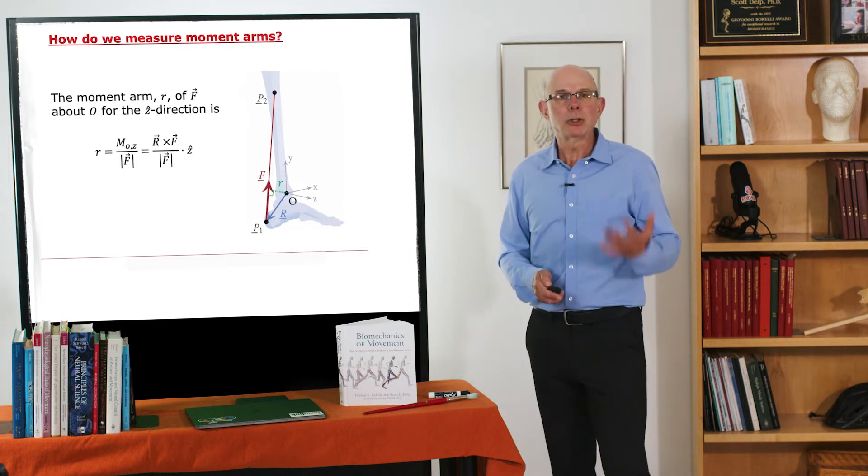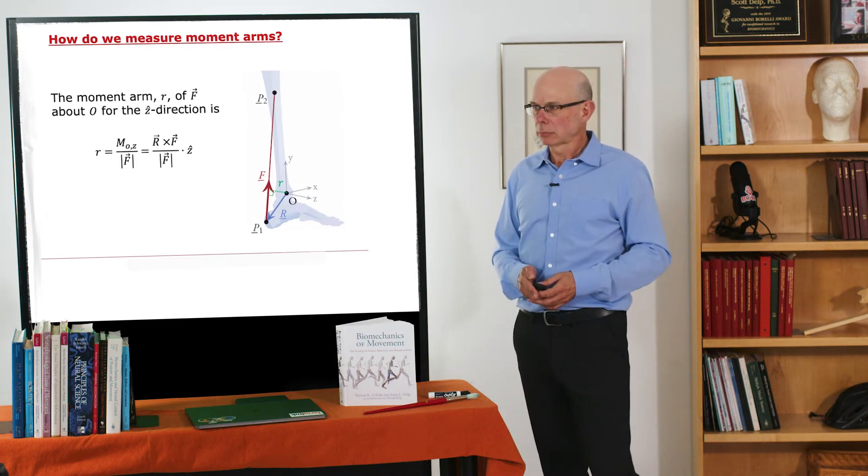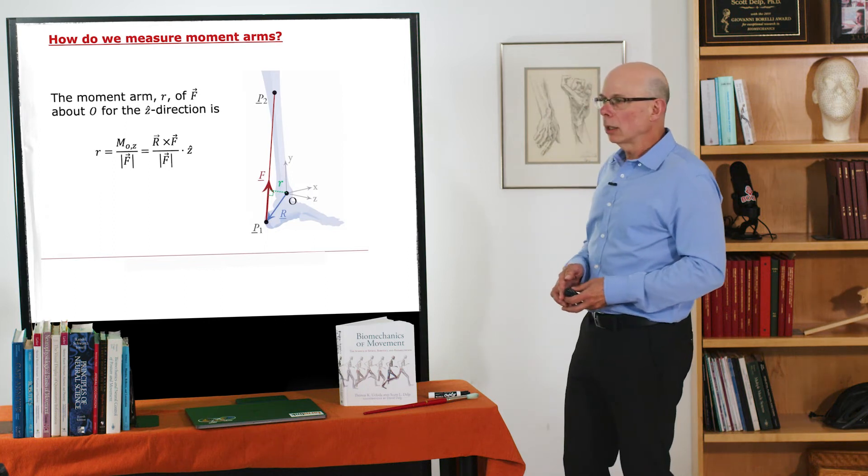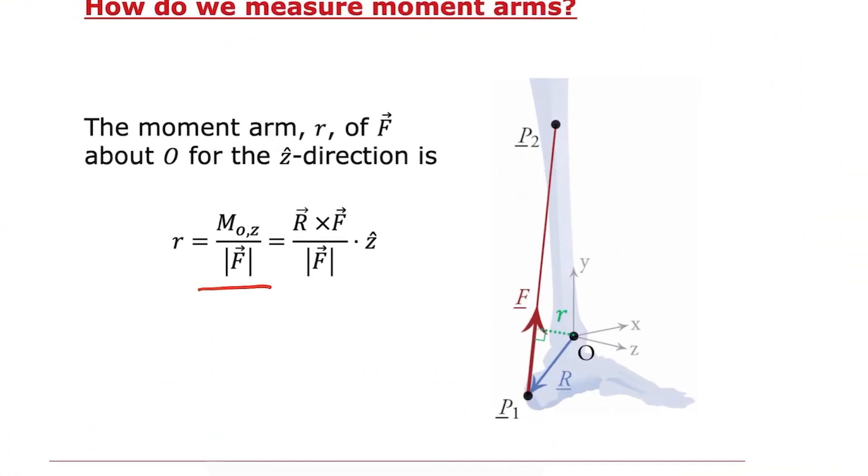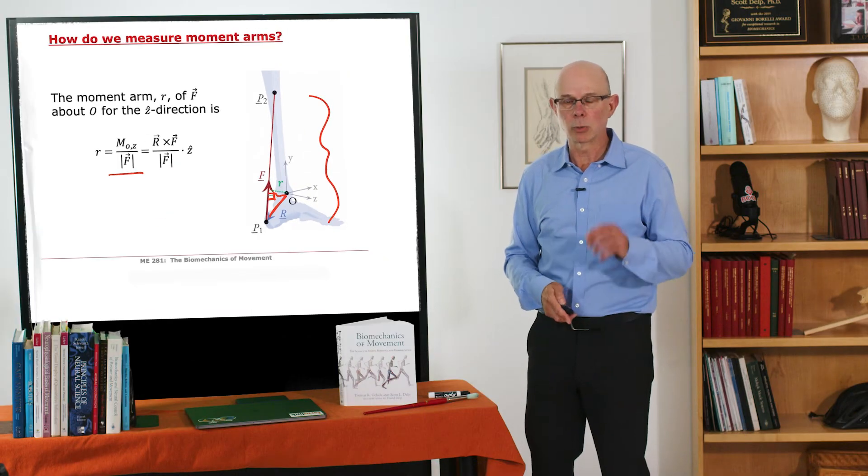So how do we measure moment arms? So the moment arm, remember, is that moment divided by the magnitude of muscle force. So we can measure that, shown here, just the r distance here. So that's the scalar moment arm. So here's the r vector. If we dot it in the z direction, we'll get just this distance here. And people typically think of this as the perpendicular distance between the muscle line of action and the center of the joint. And that's a good way to think about it.